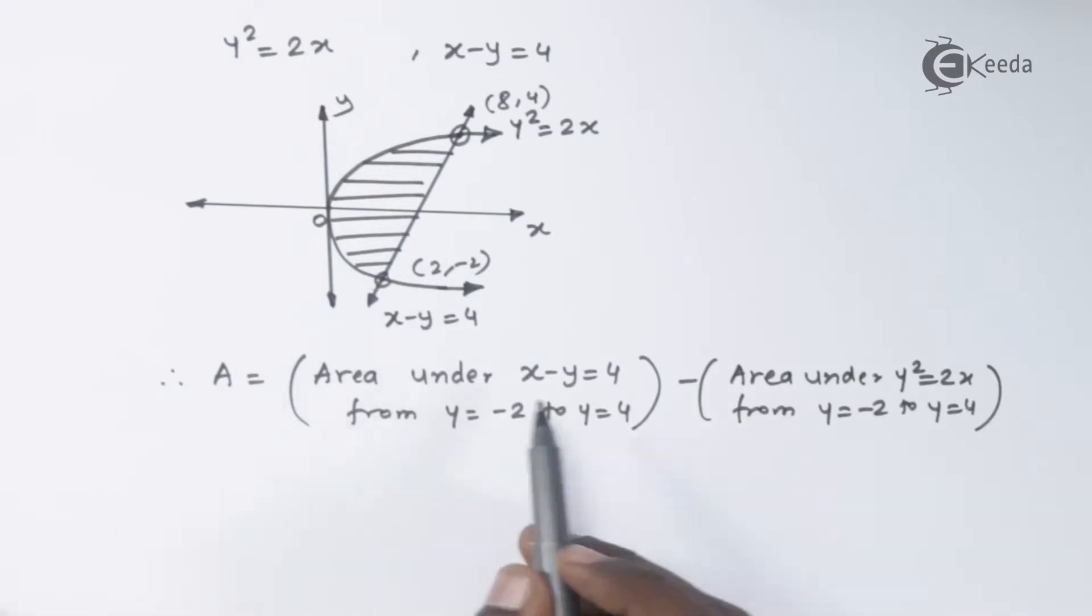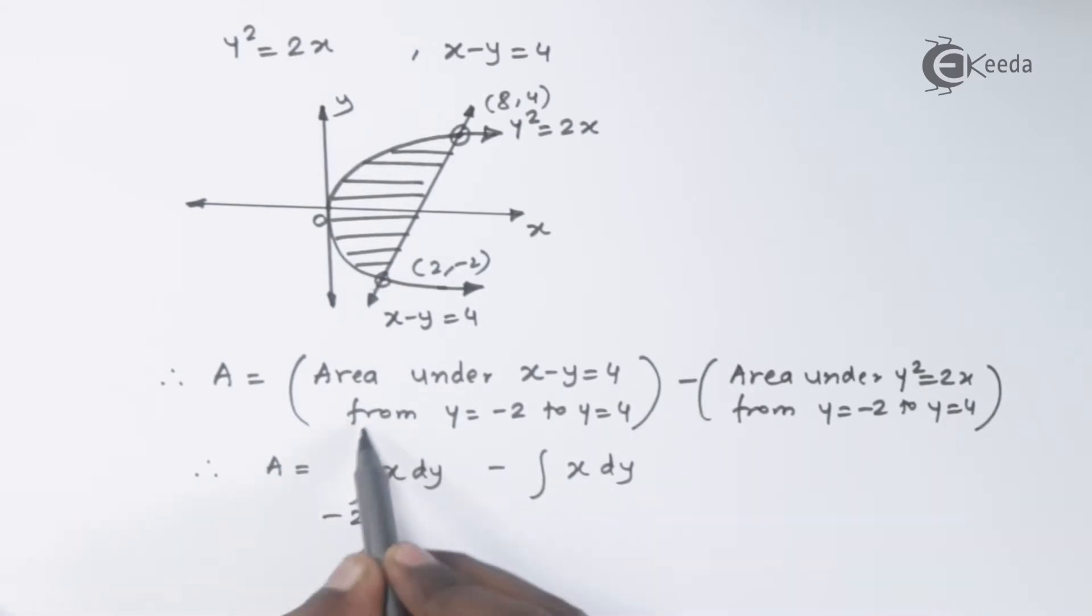So we have area equal to area under the line from -2 to 4 minus area under the parabola from -2 to 4. As we are using the limits of y, the formula for the area will be integral x dy. The limits of y will be -2 to 4. We will find the value of x from the given line which will be y + 4 and the value of x from the parabola will be y²/2.